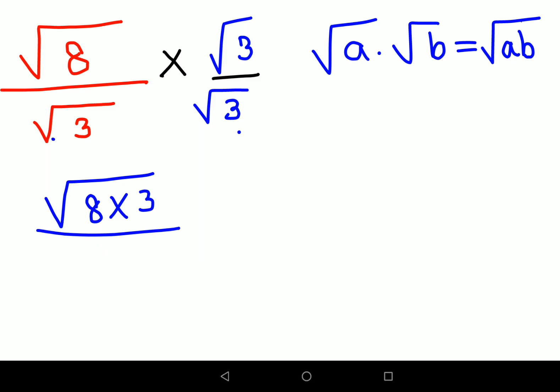Now what happens is root of 8 times 3, that gets you 24, so root of 24 upon 3. Now what you can do is you will again do factorization.